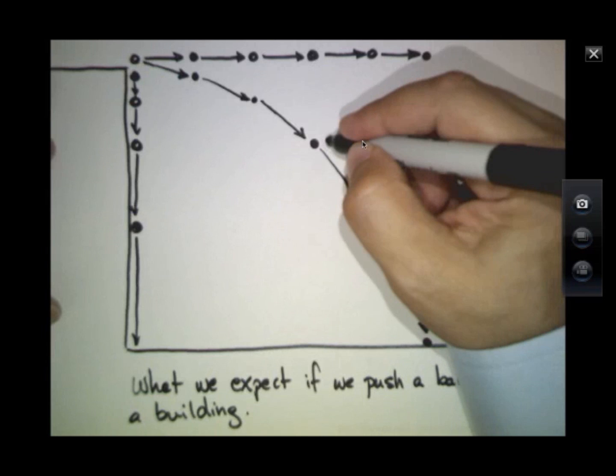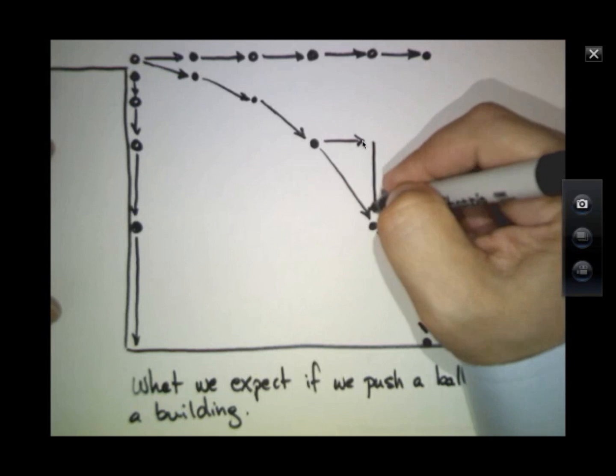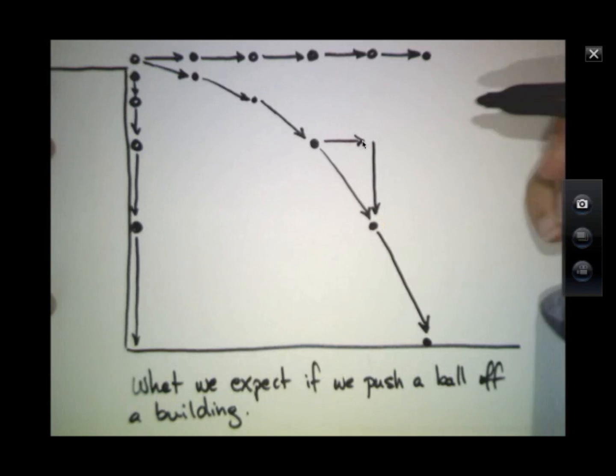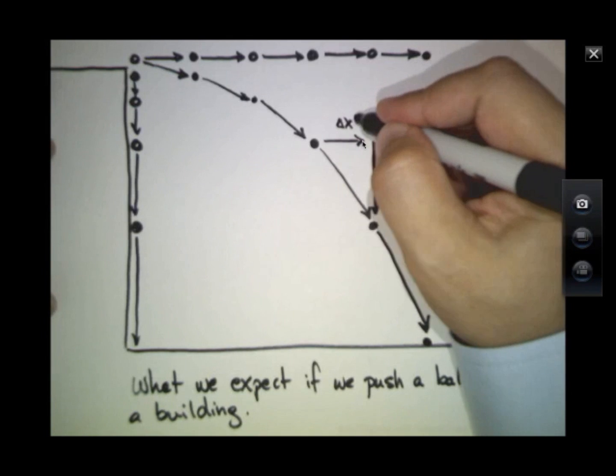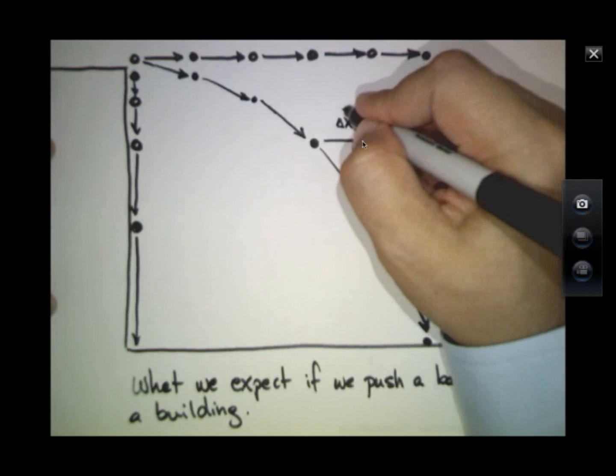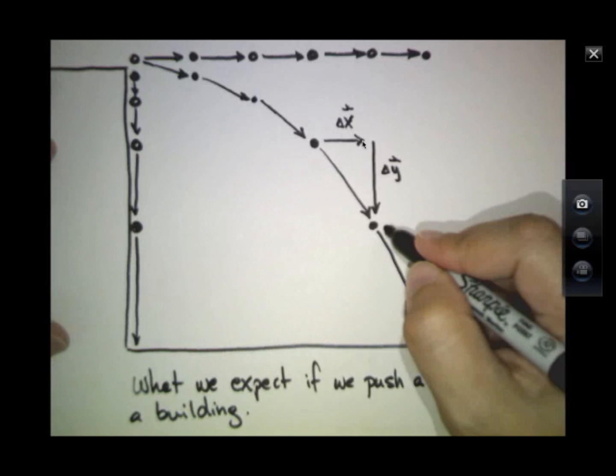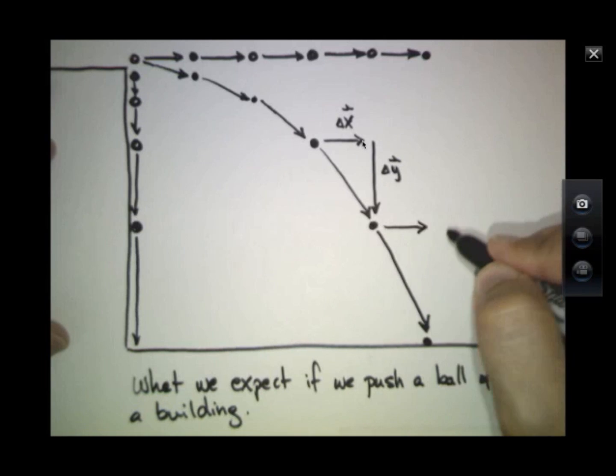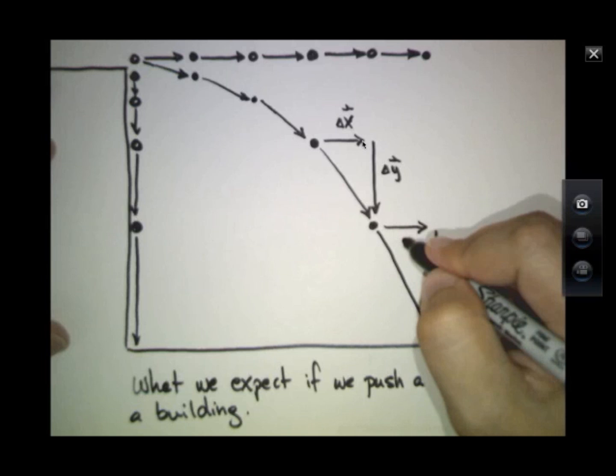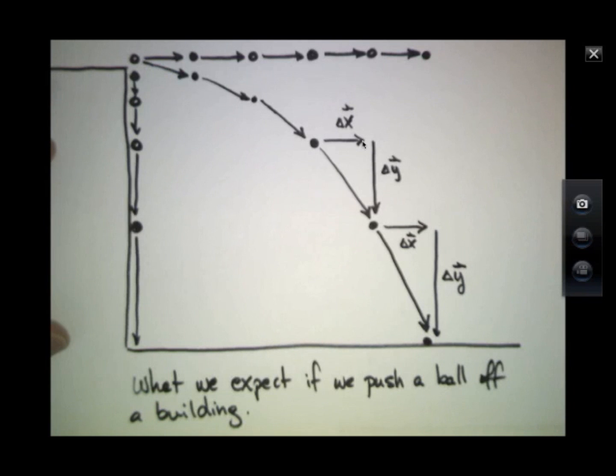So each of these increments is really the sum of two vectors. There's a delta x and there's a delta y. Now notice that delta x is always the same. It's delta y that's growing.